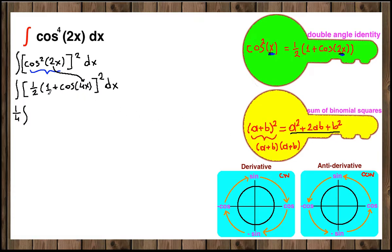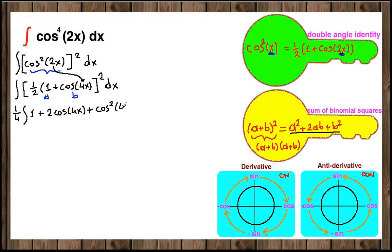Here our a term is 1 and our b term is cosine of 4x. So a squared is 1 squared, which is 1, plus 2ab is 2 times cosine of 4x, which gives 2 cosine of 4x, plus b squared is cosine squared of 4x. So we have the integral of 1 plus 2 cosine of 4x plus cosine squared of 4x, dx.